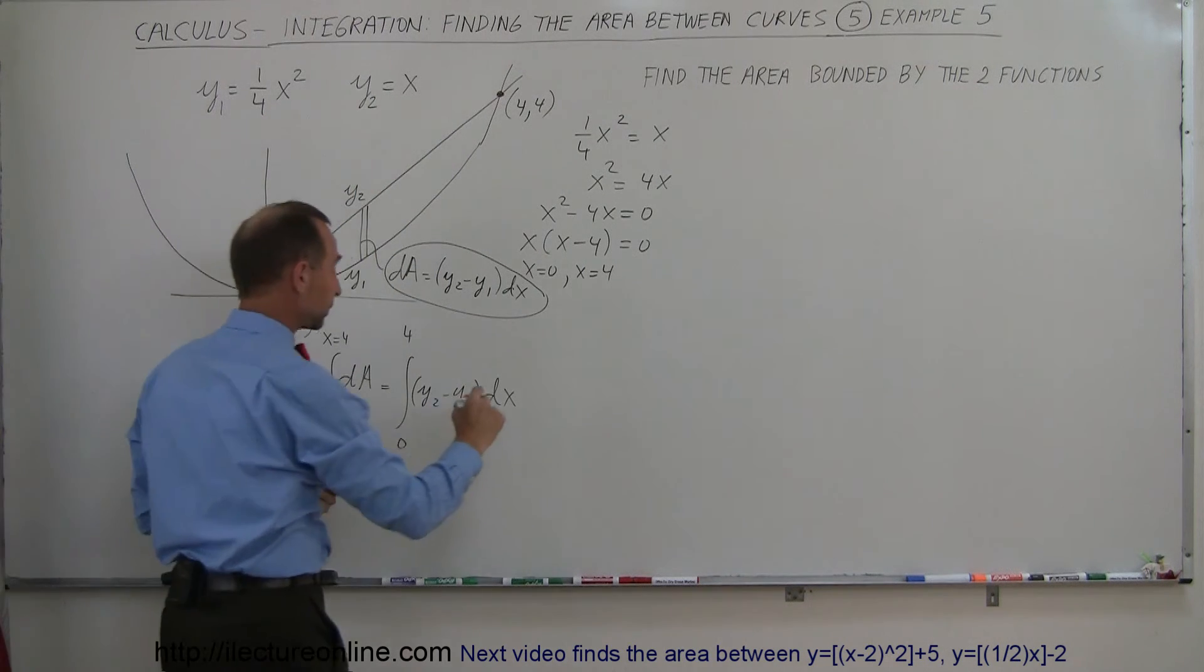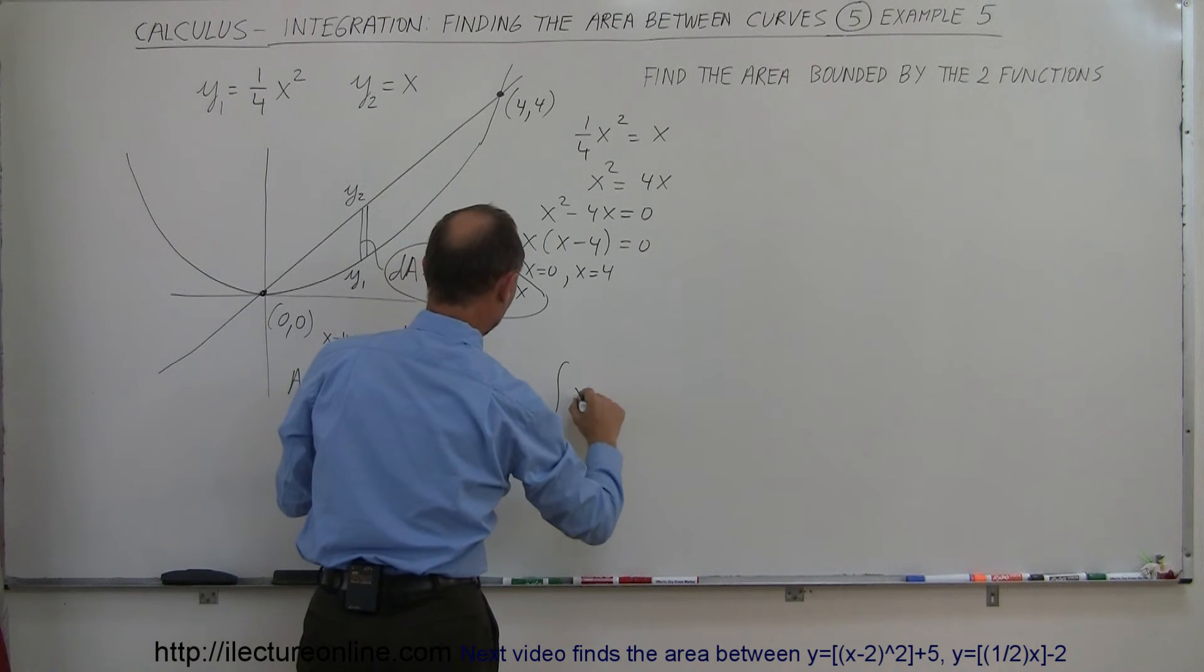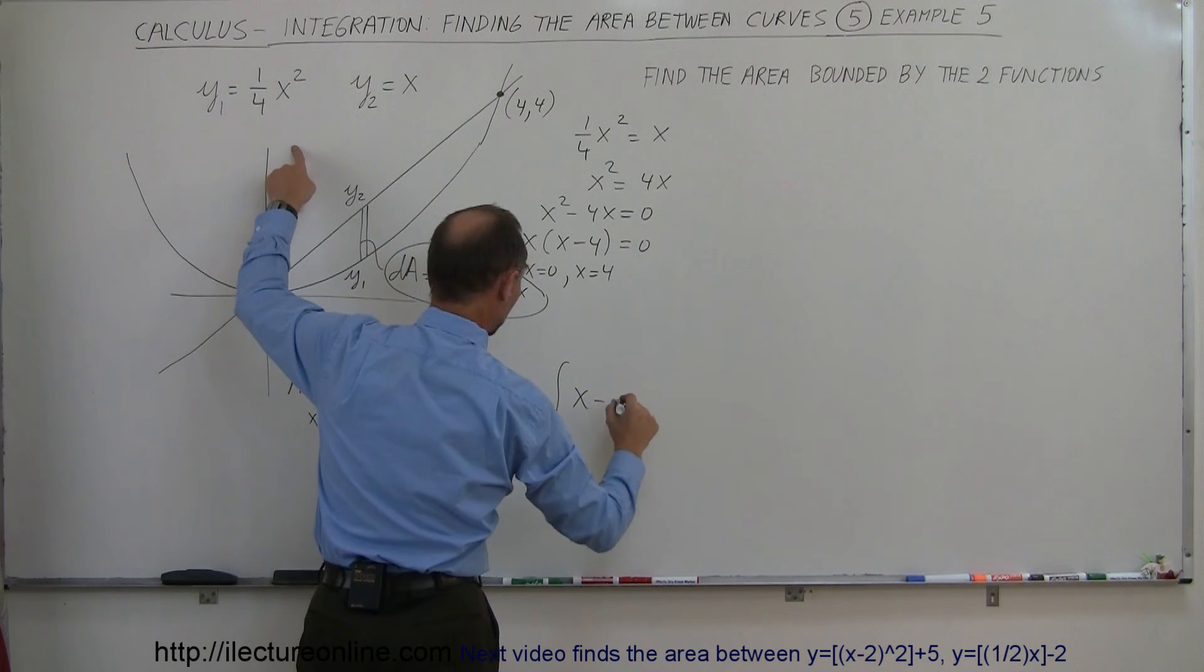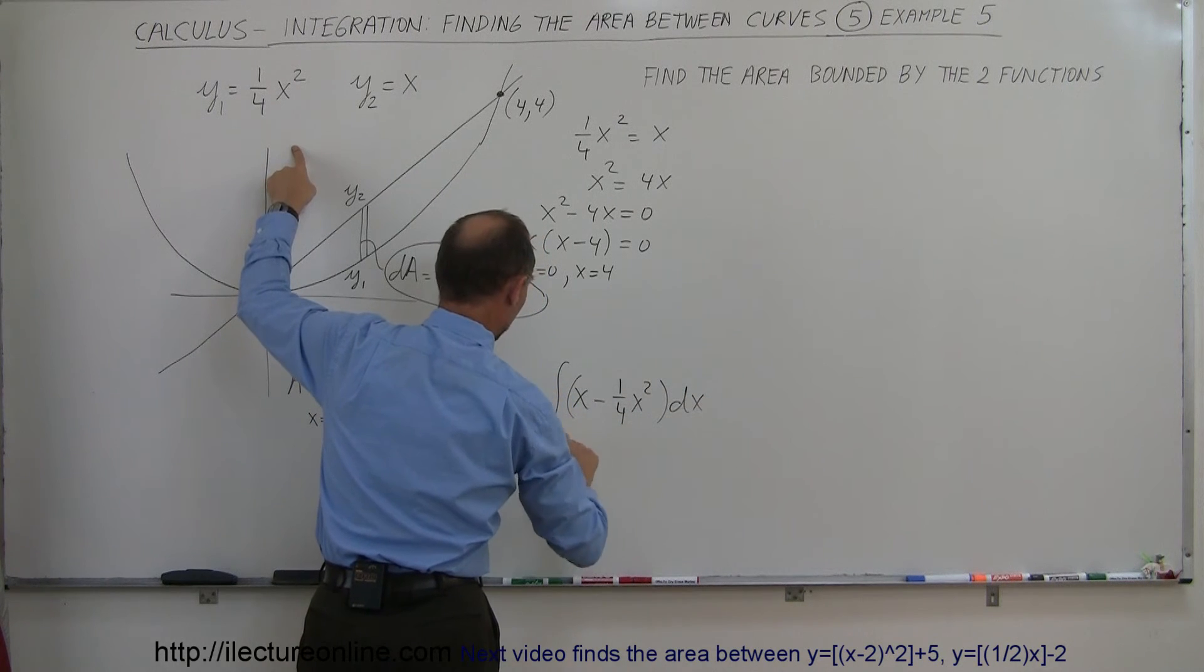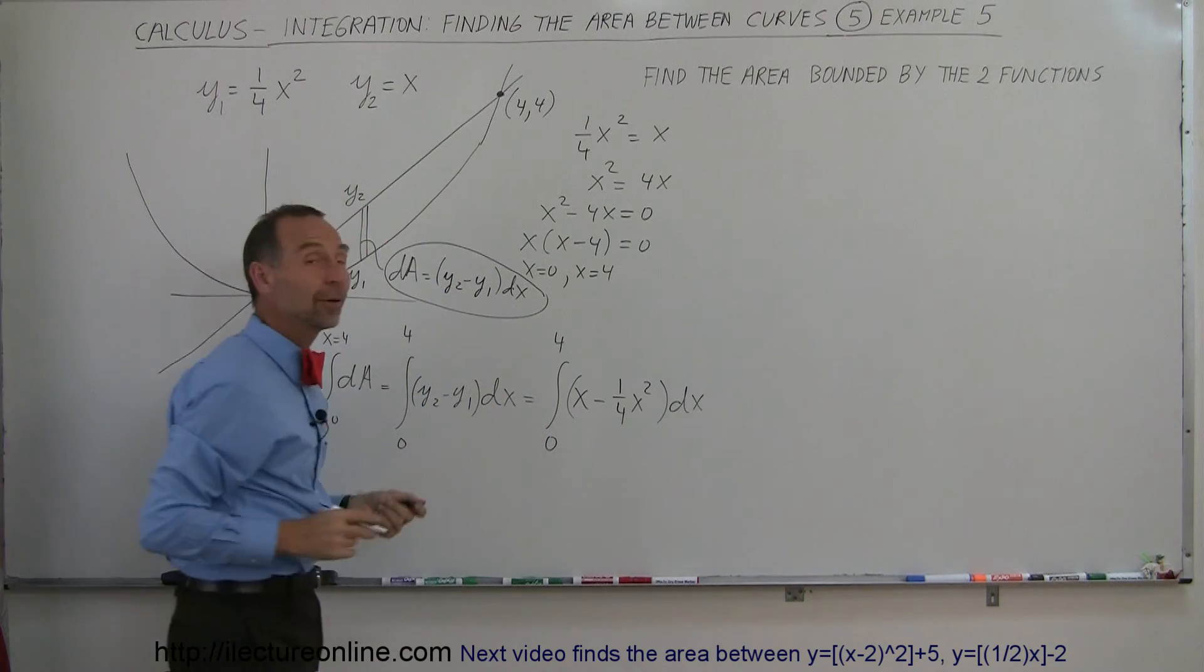y1 would be equal to 1 quarter x squared. So that becomes the integral of y2, which is x, minus y1, which is 1 quarter x squared times dx, and the limits are from 0 to 4, and I'm ready to integrate.